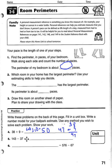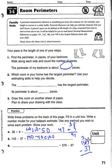In number 5, 143 can be rounded to 140, and 37 can be rounded to 40, giving a ballpark of 100. To do the actual math, 143 minus 37: since 3 minus 7 does not work, we borrow — the tens digit becomes 3, and 13 minus 7 is 6. Then 3 minus 3 is 0, and 1 remains, giving an answer of 106.